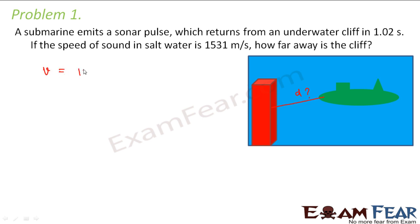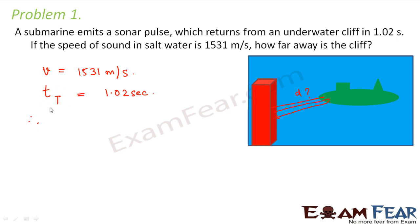We know that the velocity of sound is given as 1531 meters per second, and it is also given that the submarine emits a sonar pulse which returns from the underwater cliff in 1.02 seconds. That means the pulse goes and comes back in 1.02 seconds — so the total time T is 1.02 seconds. The total distance travelled will be equal to velocity into time: 1531 into 1.02, which equals 1561.62 meters.